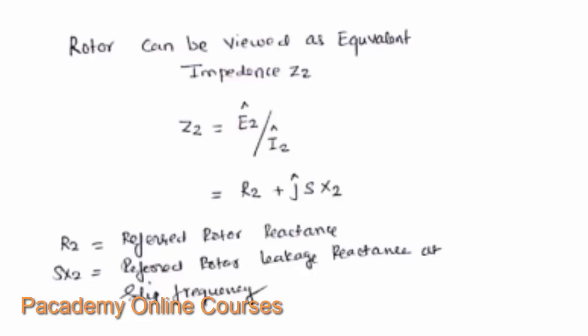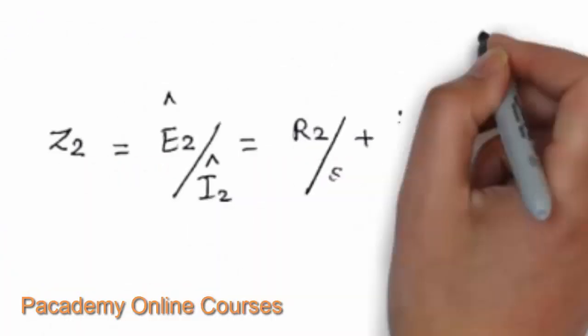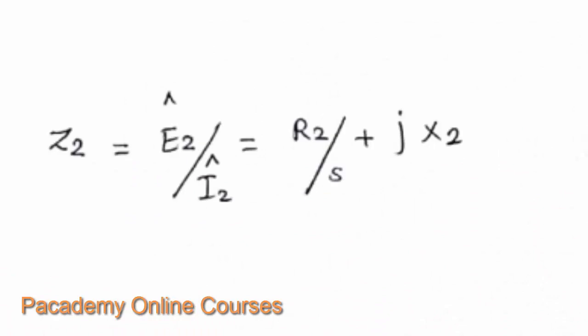In complex form, R2 is the referred rotor resistance and SX2 is the referred rotor leakage reactance at slip frequency. To simplify the equivalent circuit and computation, all rotor values are transferred to the stator side so they can be written in a single circuit form. The rotor impedance Z2 can then be rewritten as R2/S + jX2.